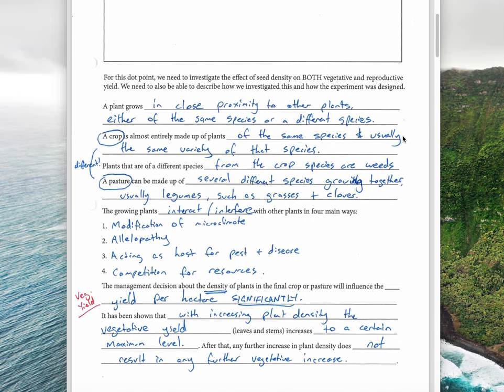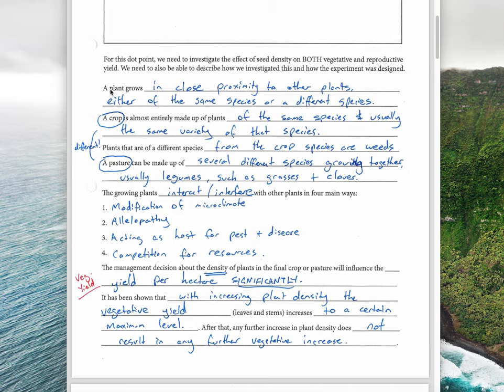First, a couple of revision points. A plant grows in close proximity to other plants, either of the same species or a different species. The important differentiator here is a crop and a pasture. A crop is something made up of all the same species and usually the same variety of that species - all wheat, or a crop of cotton, or a crop of barley.